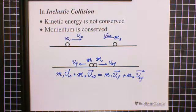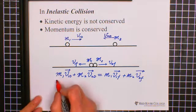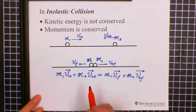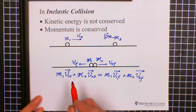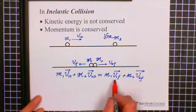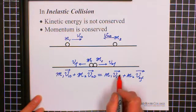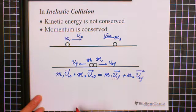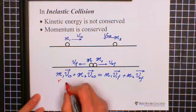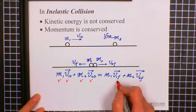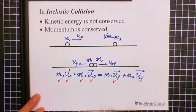In that situation, we need five pieces of information: M1, M2, V1 initial, V2 initial, and V1 final. If we know M1, M2, V1 initial, V2 initial, and V1 final, then we can find V2 final.